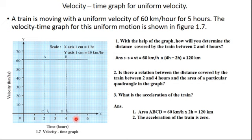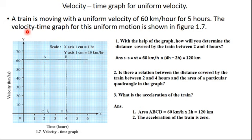The time axis shows 1, 2, 3, 4, 5, 6 hours, and the velocity axis shows 10, 20, 30, 40, 50, 60 kilometers per hour. The train is moving with a uniform velocity of 60 kilometers per hour for 5 hours. A dotted line has been plotted on the graph. This graph for uniform motion is shown in figure 1.5.